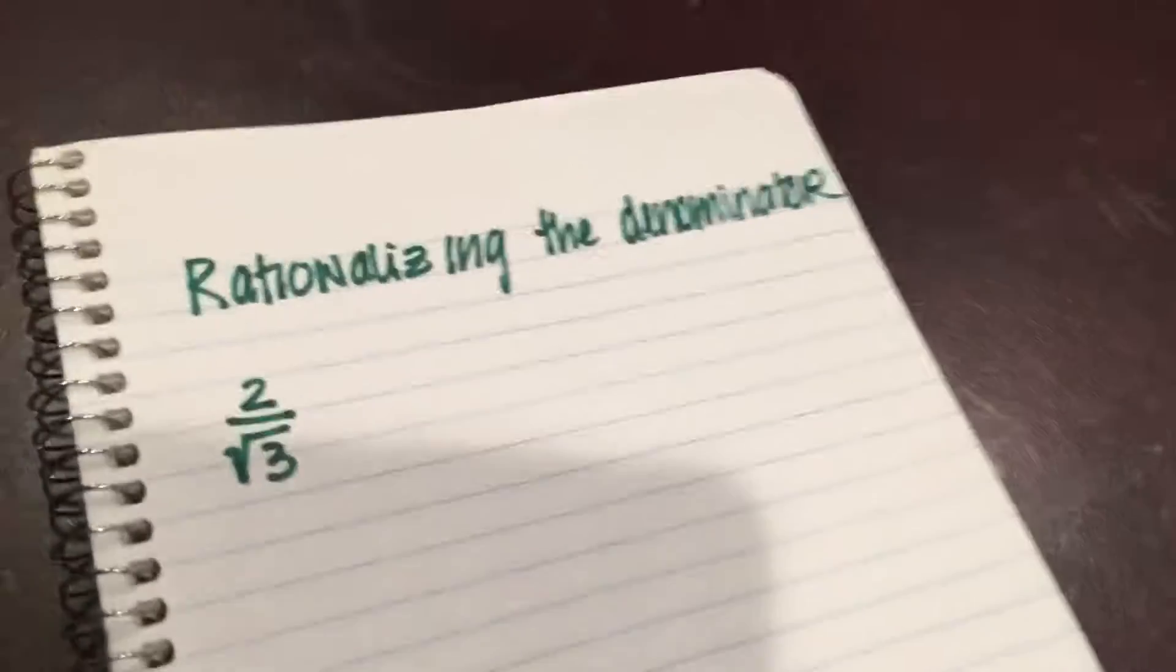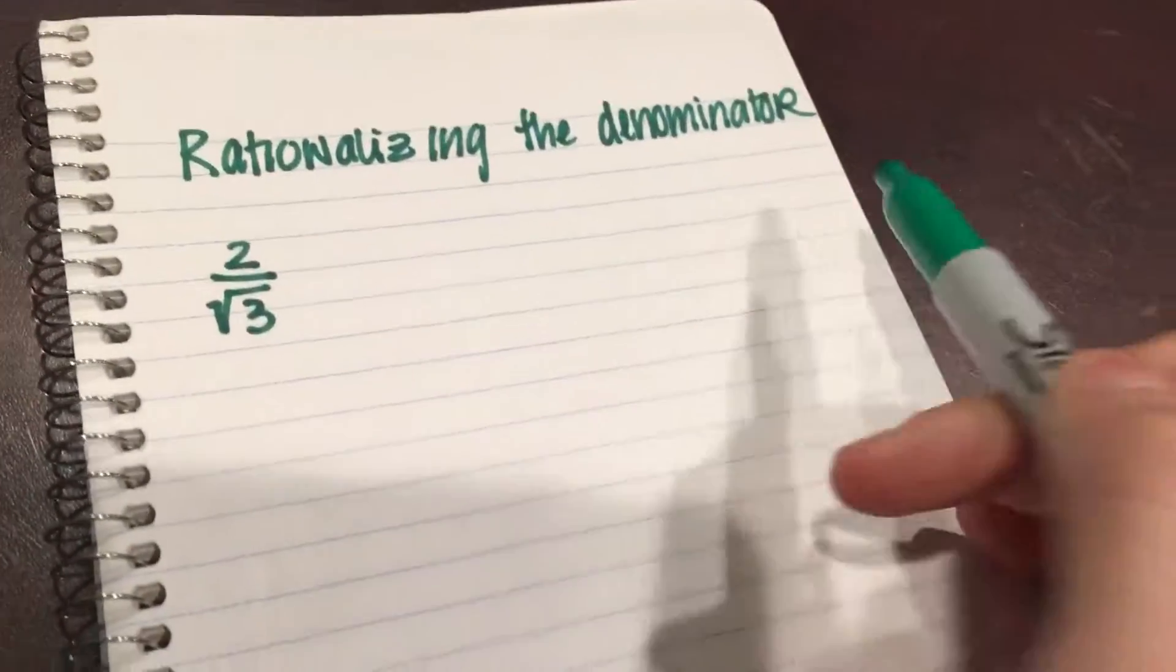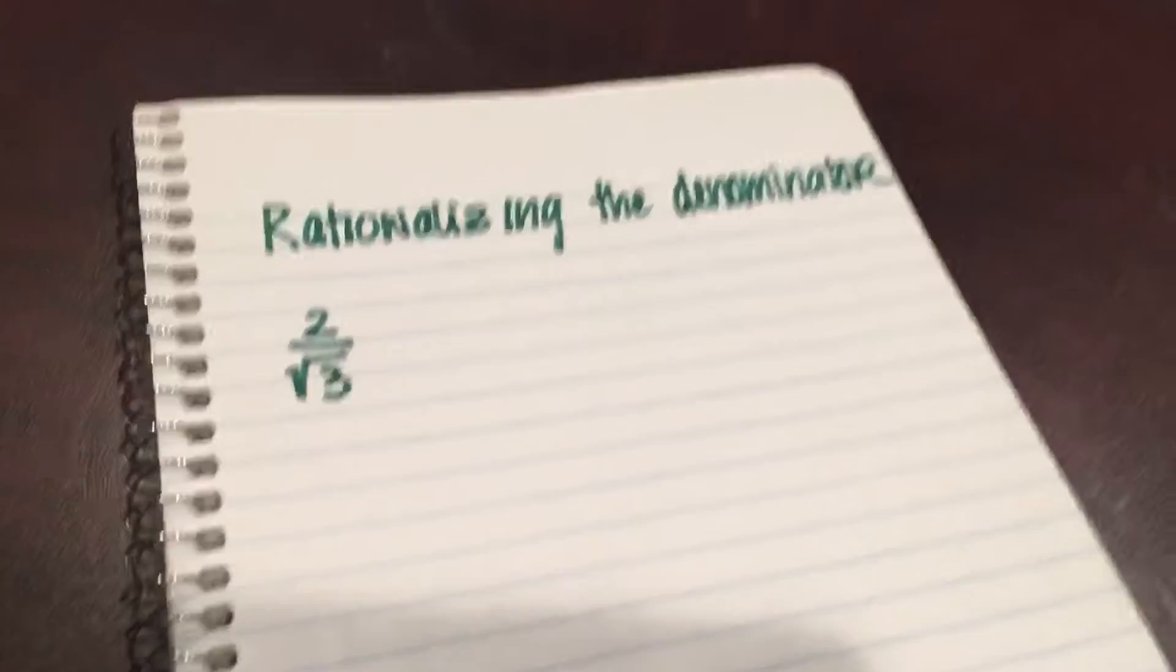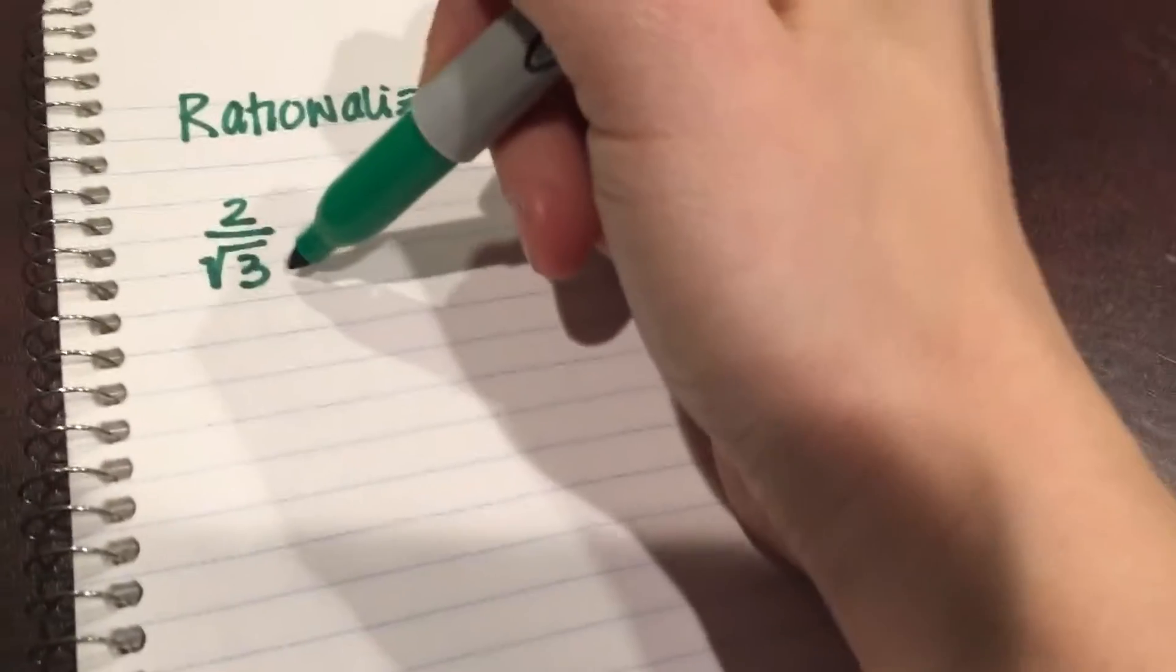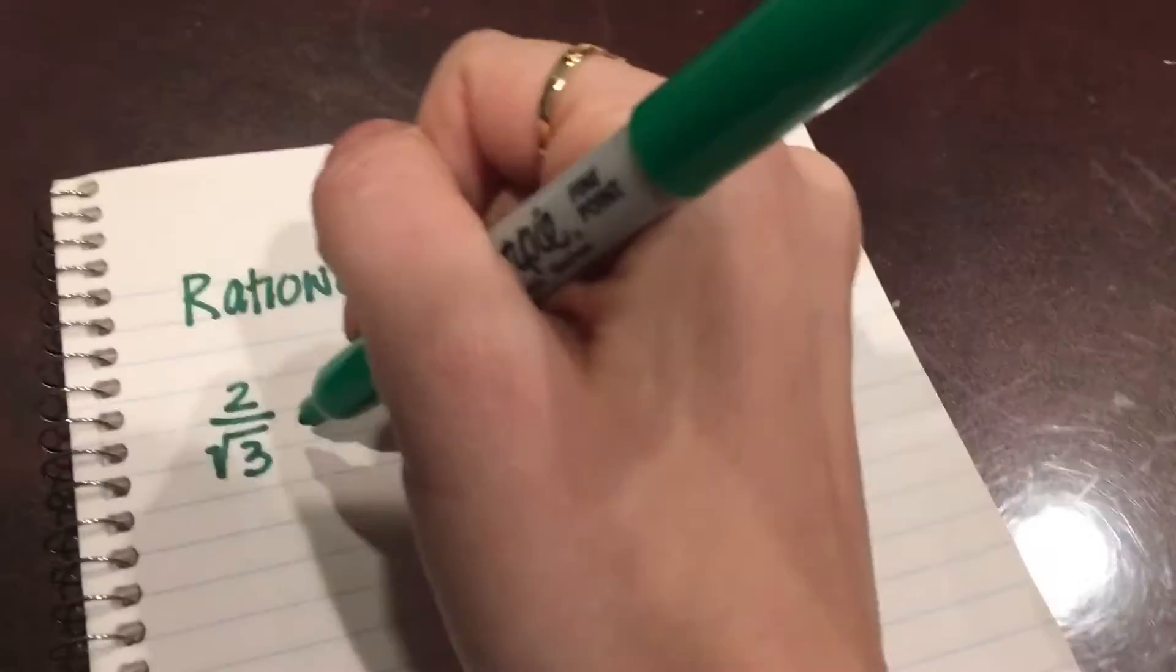Hey guys, so today you're not seeing my face. Right now we are going to rationalize the denominator. For some reason, there is a rule in algebra that you cannot have a radical in the denominator, so we have to rationalize it. One way is if it's like this, all you do is multiply the top and bottom by whatever number's in your denominator.